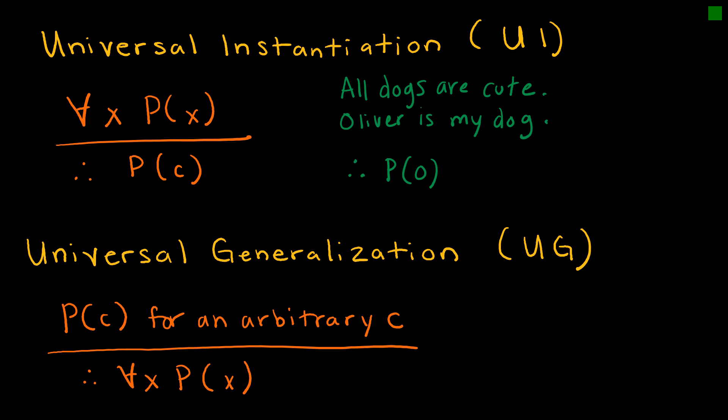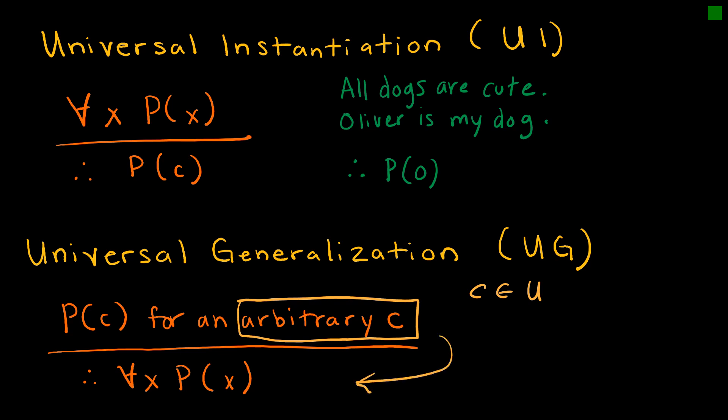Universal generalization is essentially this rule backwards. If I tell you that P(C) is true for an arbitrary C, then essentially I'm saying it is true for all values. The important thing to remember is that we're talking about an arbitrary C — if we pick any value from the domain, some C that belongs to our universe, and it's true no matter which value we choose, then essentially we're saying it's true for all values in the domain.